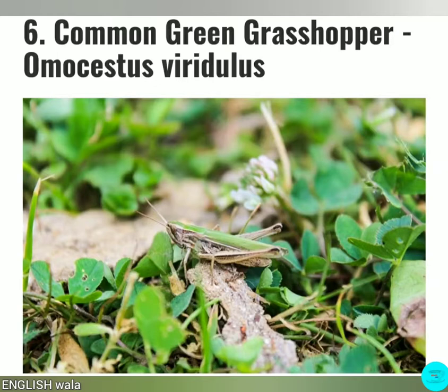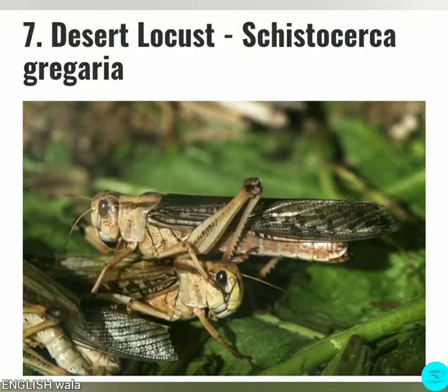Number 6: Common Green Grasshopper. This type of grasshopper has a green body which sometimes has brown markings. They are small in size, measuring 0.7 inch to 0.8 inch. Common Green Grasshoppers are mostly found in Europe and Asia. They mostly prefer wet conditions and live amongst long grasses.